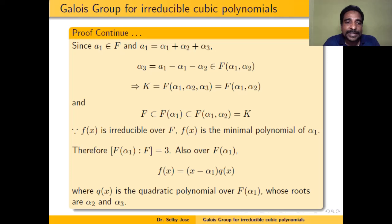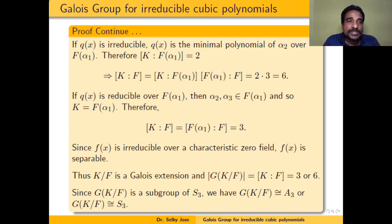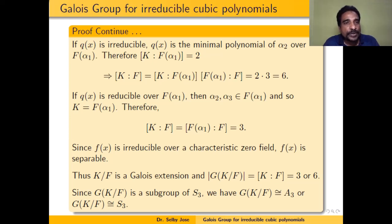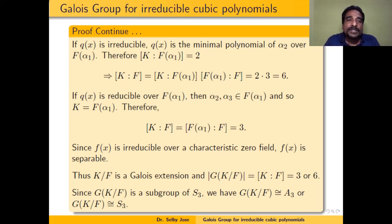Over F(α1), we can write f(x) = (x - α1)·q(x), where q(x) is a quadratic polynomial over F(α1) with roots α2 and α3. If q(x) is irreducible, it is the minimal polynomial of α2 over F(α1), so [K:F(α1)] = 2. By the tower law, [K:F] = [K:F(α1)]·[F(α1):F] = 2·3 = 6.